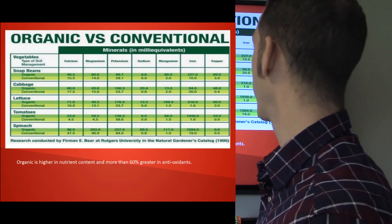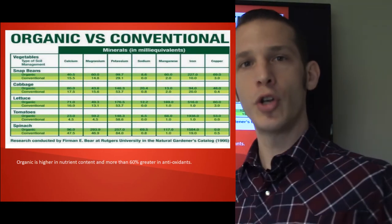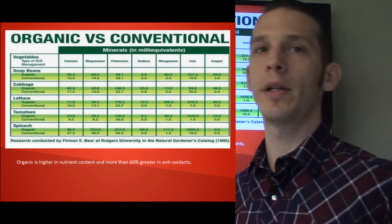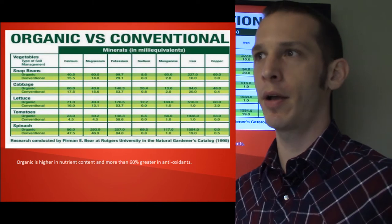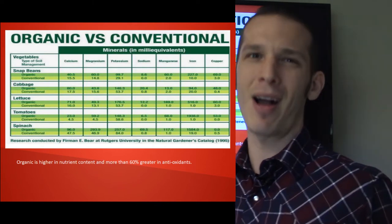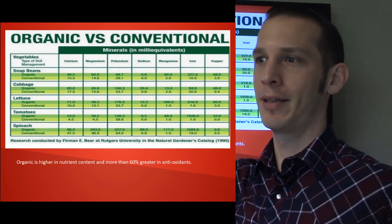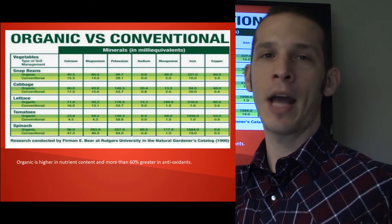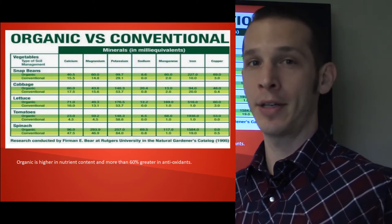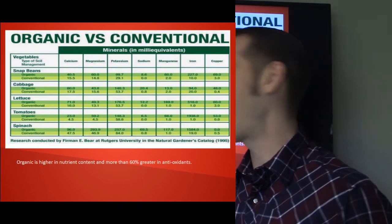Organic versus conventional — the difference in actual nutrient quality. We talked about all the different toxic inputs, and here we're looking at the actual nutritional differences between organic and conventional foods.